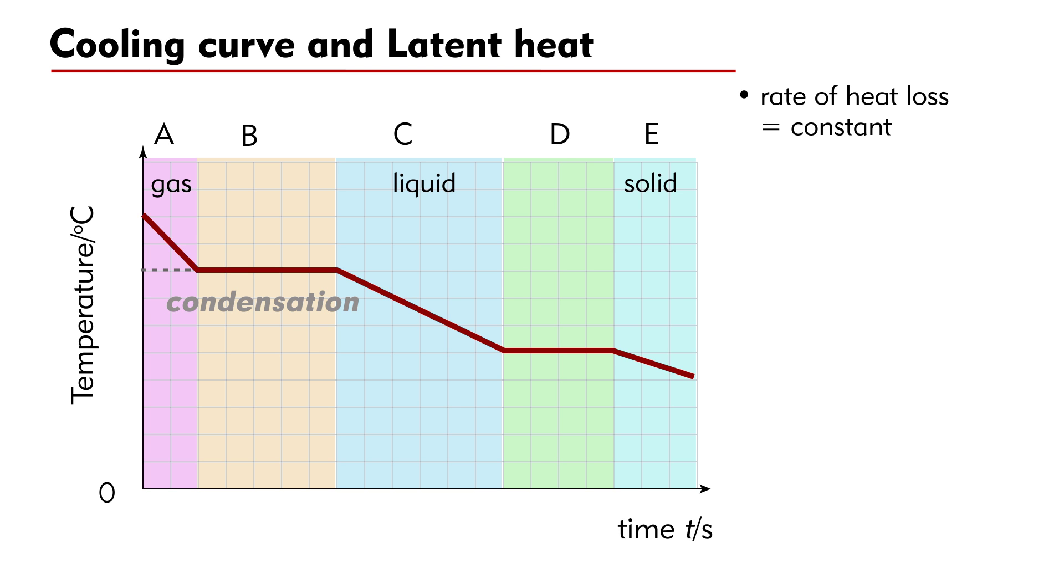At B, the gas is condensing into a liquid. It is a mixture of gas and liquid. The temperature T1 is the boiling point of the substance.